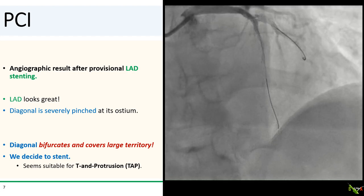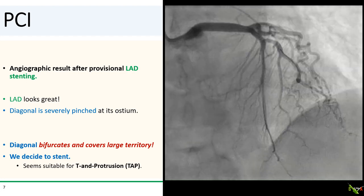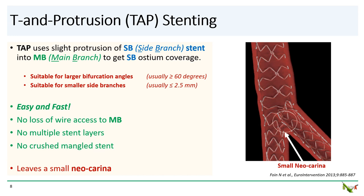So which bifurcation strategy should we use? It does seem suitable for T and protrusion, or TAP. The TAP technique is a provisional bifurcation stenting technique in which the side branch stent is placed protruding just slightly into the main branch so that the side branch ostium can be fully covered. It is best when the side branch is small or when the bifurcation angle is large, though I've gotten very reasonable results for even larger side branches and smaller bifurcation angles. The technique is one of the easiest bifurcation stenting techniques — it is quick, does not result in loss of wire access to the main branch, and does not leave multiple stent layers or crushed mangled stent behind. However, there is a small neocarina, which can be minimized for larger bifurcation angles or smaller side branches.